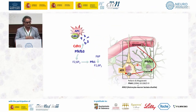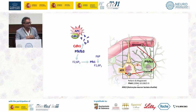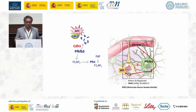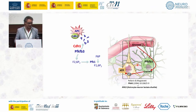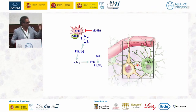This perfectly fits with the so-called astrocyte-neuron lactate shuttle, proposed by Pierre Magistretti and Luc Pellerin, indicating that astrocytes may serve as lactate suppliers to neurons during active neurotransmission. I won't enter into that topic because it is somewhat controversial and not the main focus of this talk.